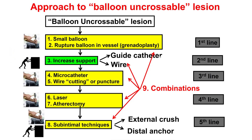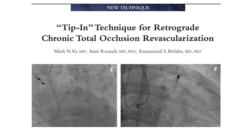What we have here is a balloon uncrossable lesion. The algorithm includes small balloons, more support, microcatheters, laser, atherectomy, or subintimal techniques. We also considered the tip-in technique: with a retrograde wire in the antegrade guide, we can intubate the proximal tip of the retrograde wire with an antegrade microcatheter, which could then be advanced over the retrograde wire through the CTO.